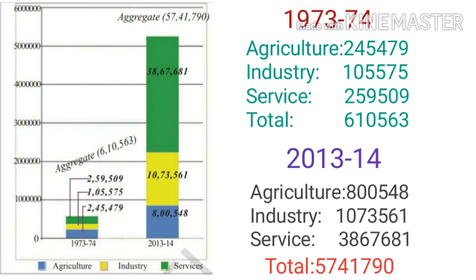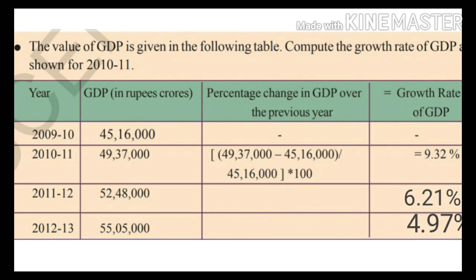There is a graph showing GDP by three sectors for the years 1973–74 and 2013–14. We can see that agriculture was the largest producing sector in 1972–73, while the service sector was the largest producing sector in 2011–12. The total value of production of goods and services in India increased approximately 15 times between 1972 and 2013–14.